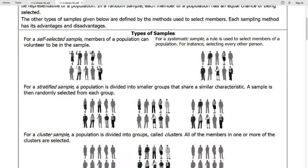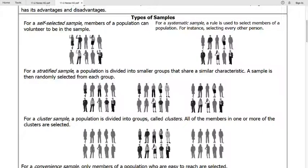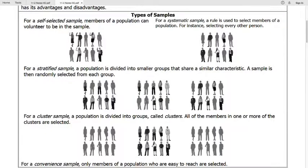So we've got different types of samples and depending on what survey or what we're trying to do, we might take different samples depending on what the outcome is we're looking for. So types of samples. Self-selected sample means that the members of the population can volunteer to be in that sample. It's optional. You can choose whether or not you want to take a survey, for example.